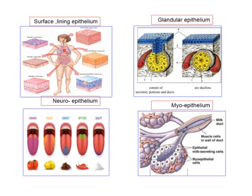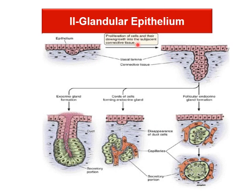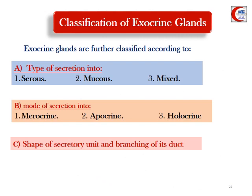Glandular epithelium is derived from surface epithelial cells that proliferate and invade the underlying connective tissue. If the proliferating cells remain connected to the surface by a duct, they form exocrine glands. If they lose that connection and secrete into surrounding blood vessels, they form endocrine glands — which have no ducts. Some glands are mixed, like the pancreas, with both exocrine and endocrine parts.